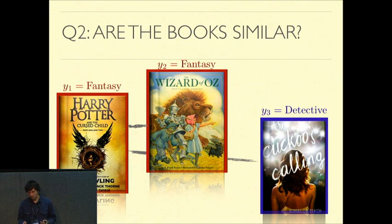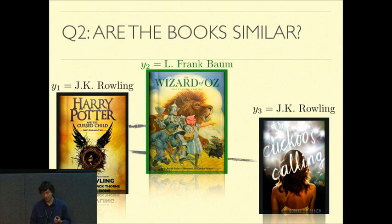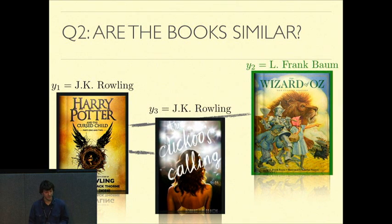Well, if by similarity you mean that similar books should be those that have similar themes and similar genres, then the first two books should be more similar, because these are fantasy novels versus an adult detective novel. But if by similar you mean that the authorship of the books are the same, then the first and the third book should be more similar than the first and the second.